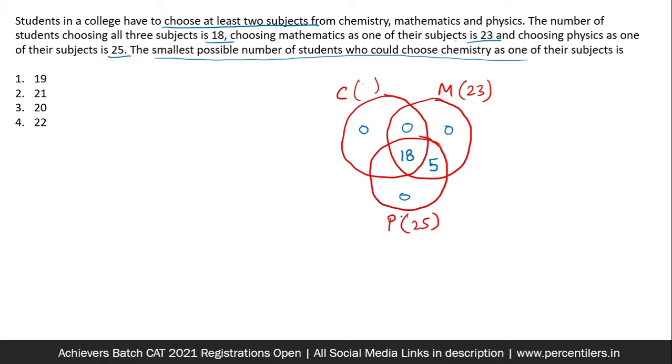So mathematics is done. Now in the physics circle I have already placed 23 people, two remaining and there is only one place remaining so I have to put them over here. This is the best or worst whatever you may want to call it that I could do and this way I can see that the minimum number that could be there in the chemistry circle is 20.